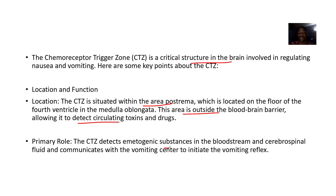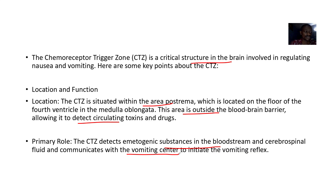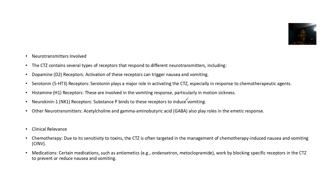Its primary role is to detect emetic substances in the bloodstream and cerebrospinal fluid, and to communicate with the vomiting centers to initiate vomiting. For example, when you are treated with emetic chemotherapy drugs, you can develop chemotherapy-induced nausea and vomiting — this center plays a key role in triggering that vomiting.